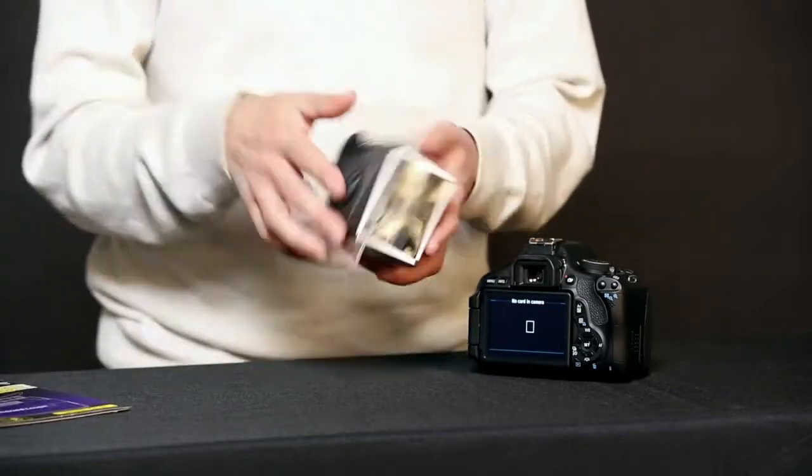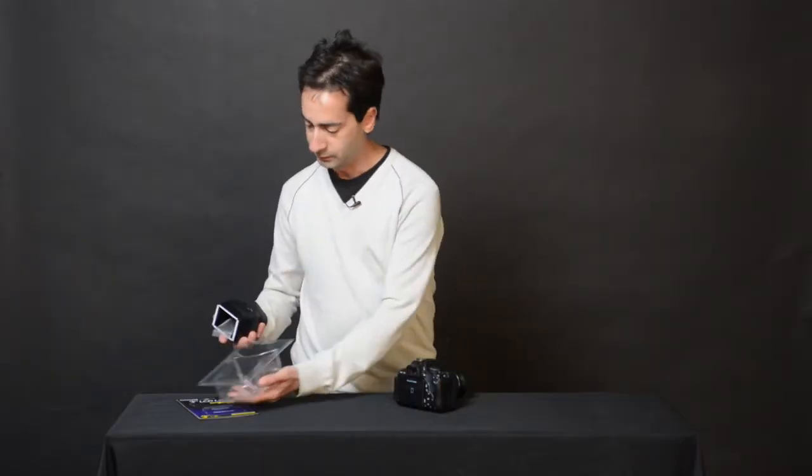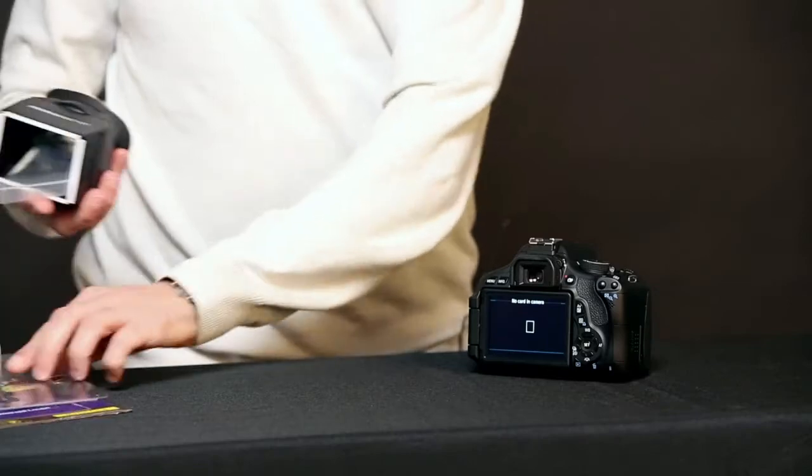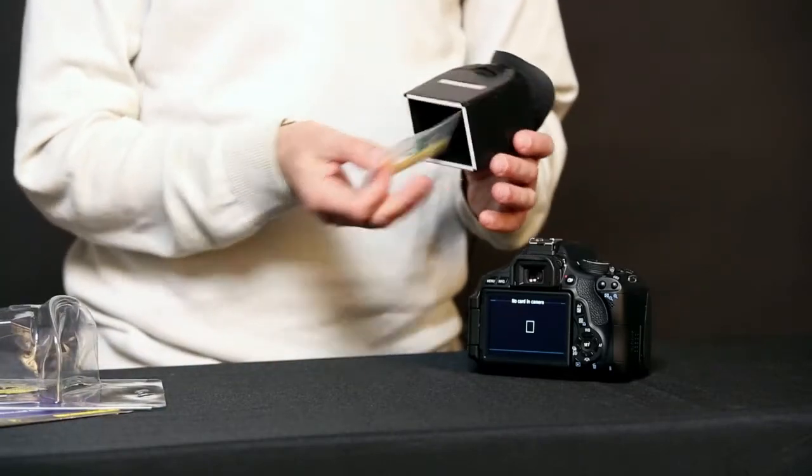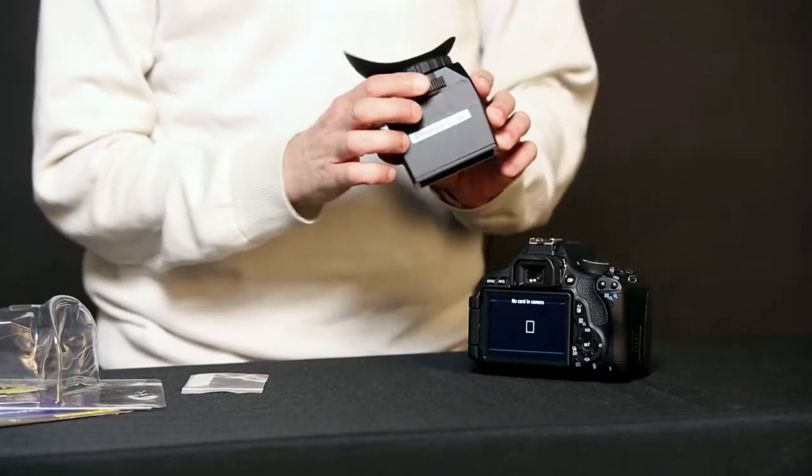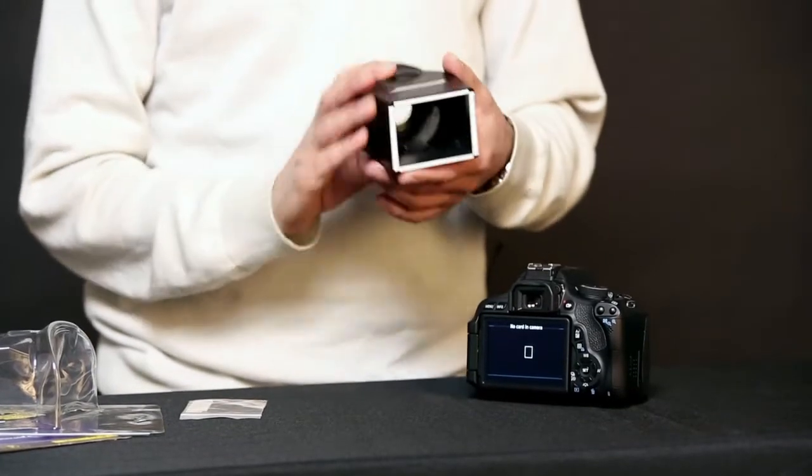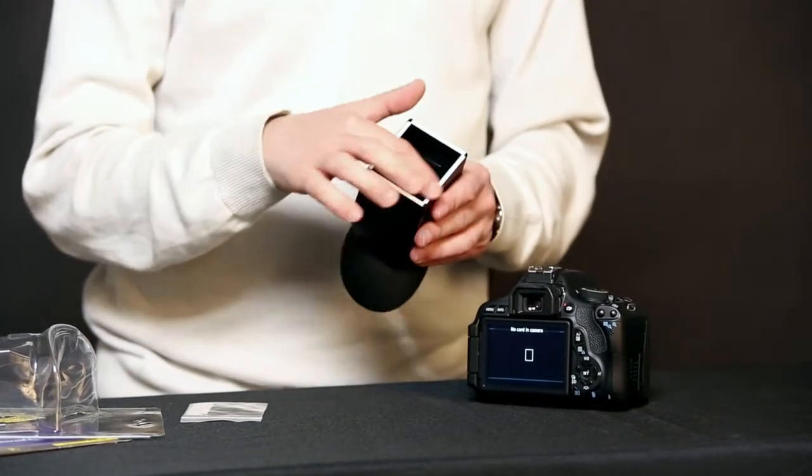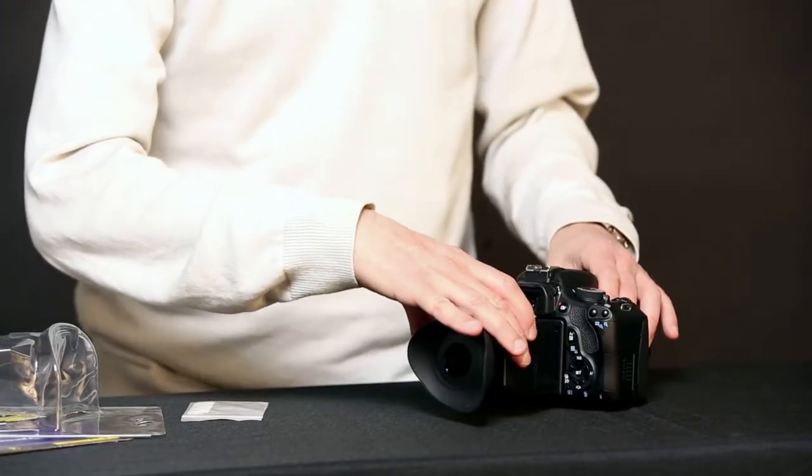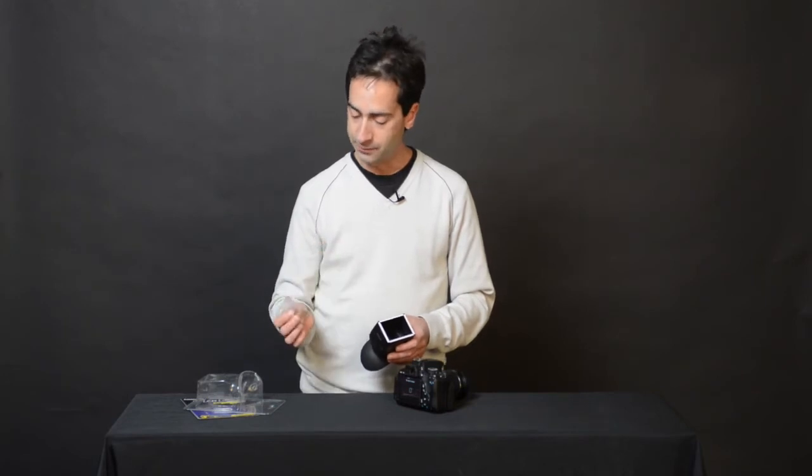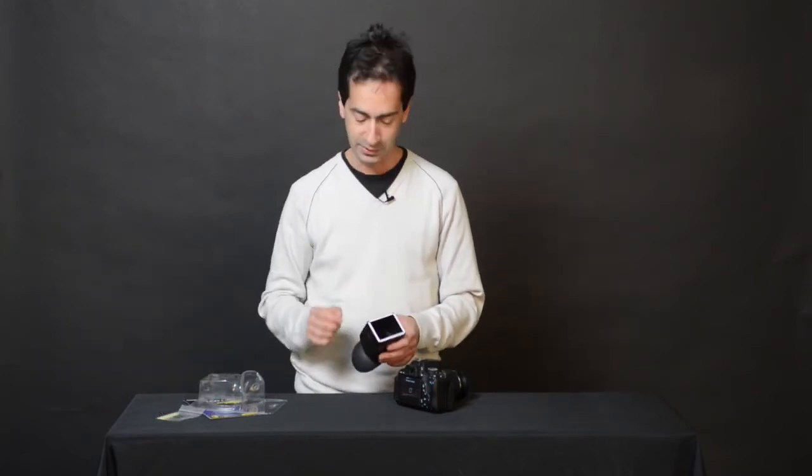The loop is a 2.5 times magnification, has a built-in diopter to adjust for your eyesight, and it's held onto the camera with double-sided adhesive tape onto the back of the LCD screen. It comes with extra double-sided adhesive tape and some pre-mounted already.